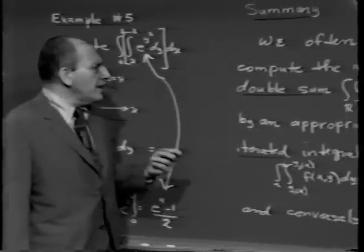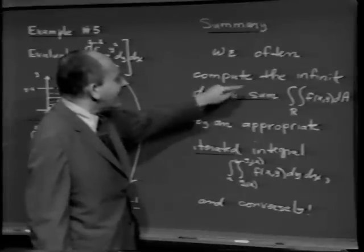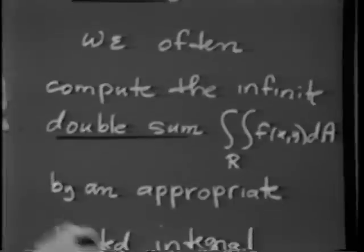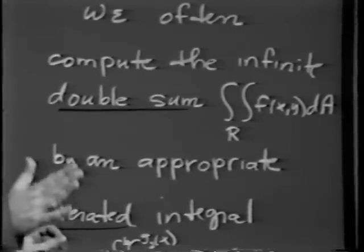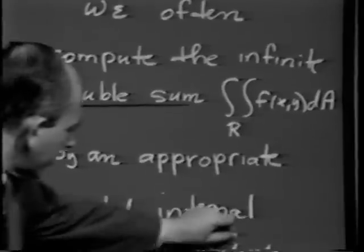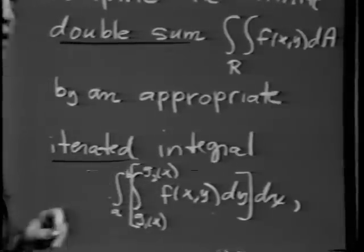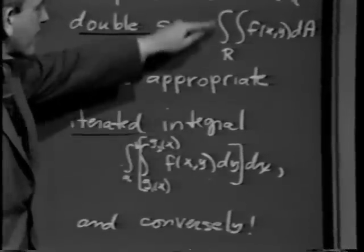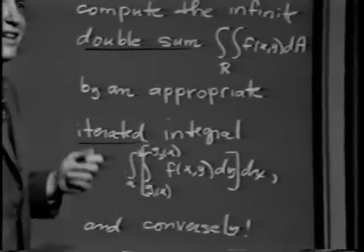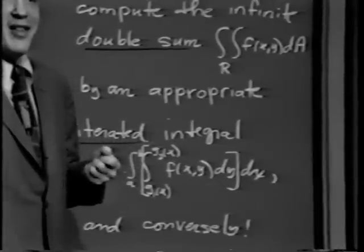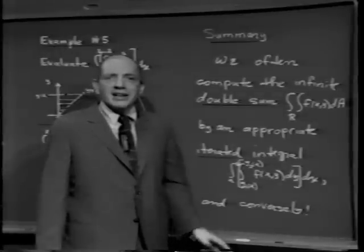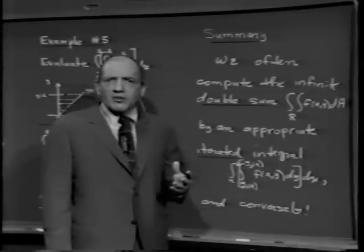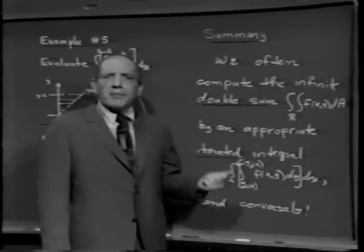To summarize today's lecture and show you what the fundamental theorem really means: we often compute the infinite double sum — the double integral over R of f(x,y) dA — by an appropriate iterated integral. That's what we mean by taking the antiderivative successively: the iterated integral. Conversely, we now have two entirely different topics related by a fantastic unifying thread that allows us to solve one problem in terms of the other and vice versa — the analogy being complete with what happened in the calculus of a single variable. We can evaluate double sums by means of an iterated integral, and we can evaluate iterated integrals by knowing the limit of an appropriate double sum.